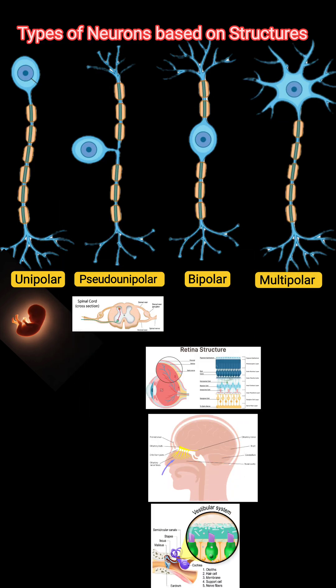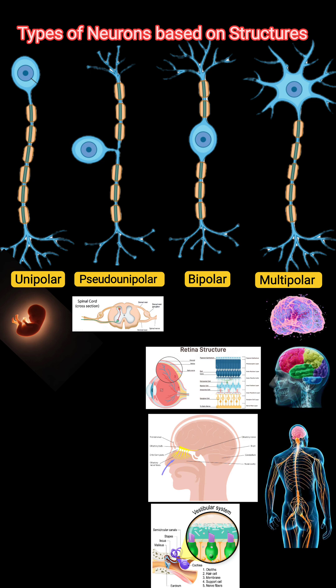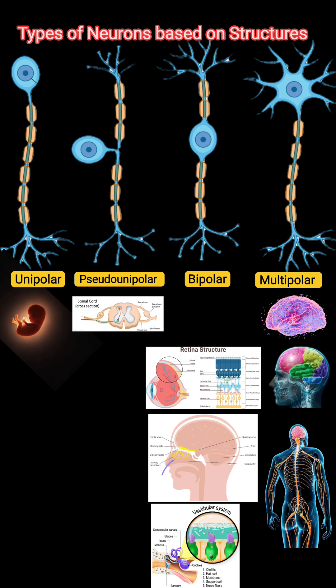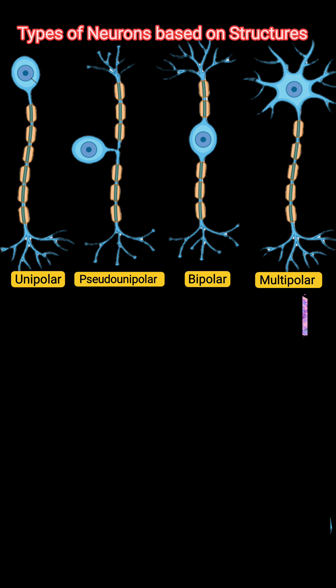4. Multipolar — the most common type — has many dendrites plus one axon. Found in the brain and spinal cord. Examples include motor neurons and interneurons.